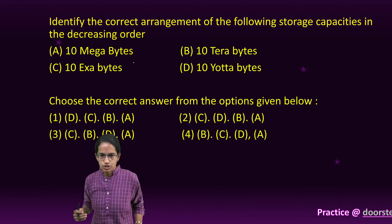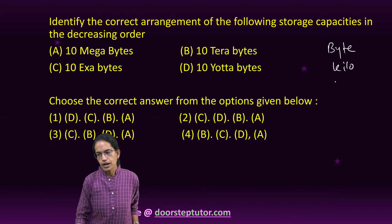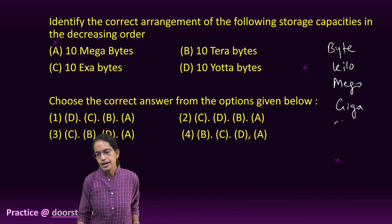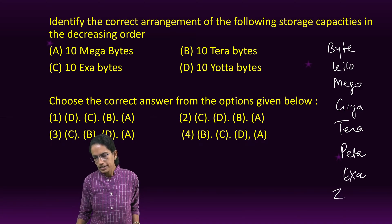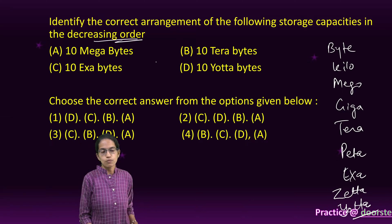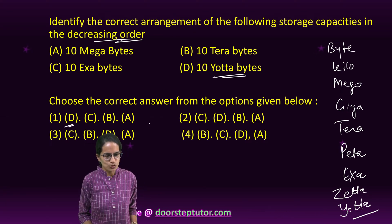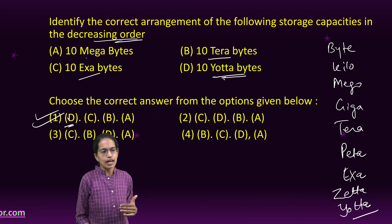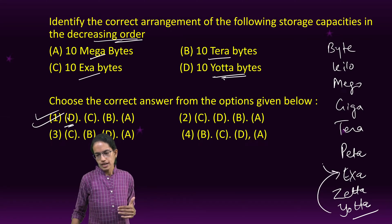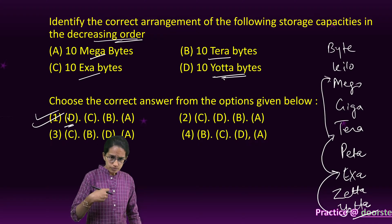The next question is the correct arrangement for storage capacity. The smallest unit is byte, then kilobyte, megabyte, gigabyte, terabyte, petabyte, exabyte, zettabyte, and yottabyte. The question asks for decreasing order — biggest to smallest — so yottabyte is the biggest. After yotta, it would be exa, then tera, and then mega. That is the sequence from highest to lowest.